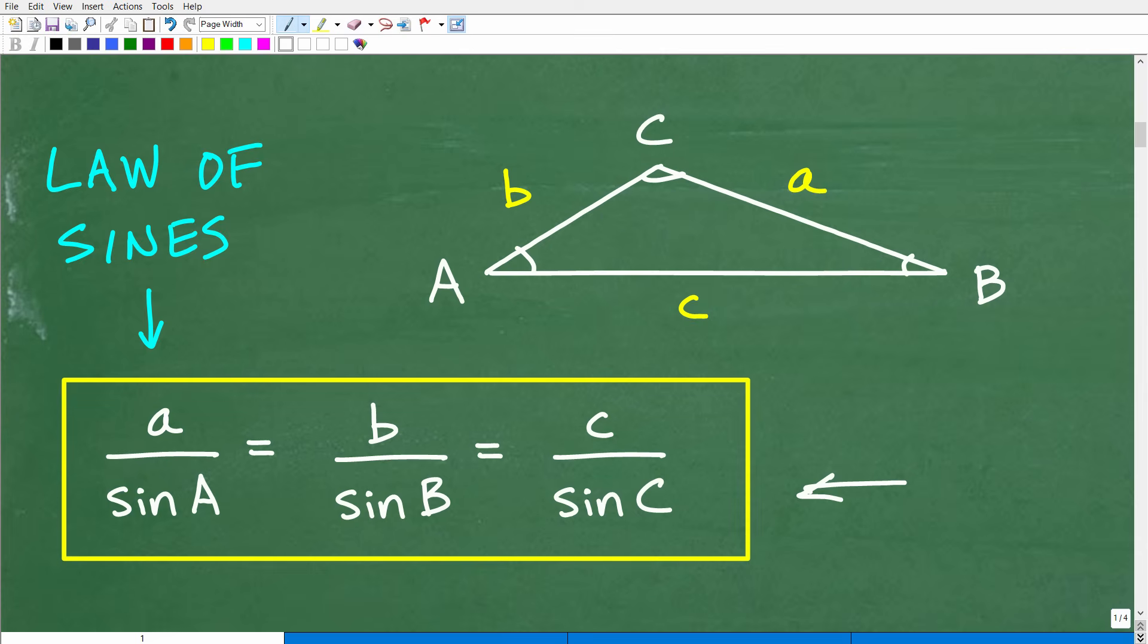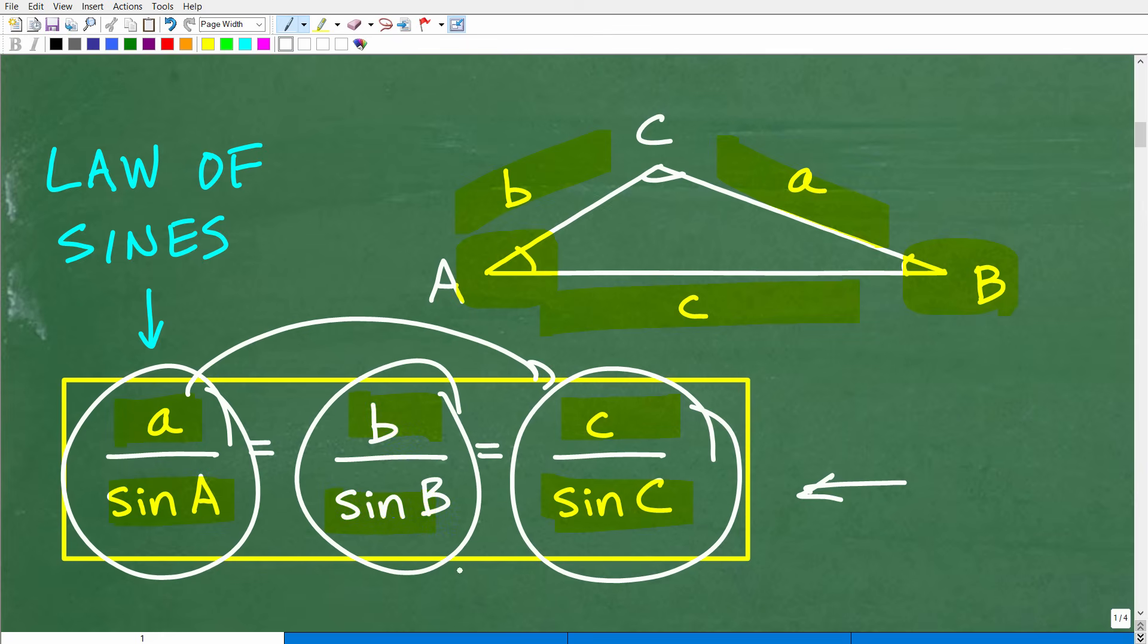But here is the Law of Sines. And this is basically what it says. So it says if we have the length of a, on this particular triangle right here. So a over sine of A, which would be the sine of this right there, is equal to b, this length right here, over sine B. And that is also going to be equal to c over sine C. Now, the great thing about the Law of Sines is you're not going to use all three of these. So you're going to select what information you're going to have. You can compare any two at a time and solve for a particular variable.